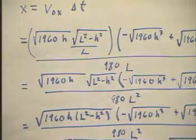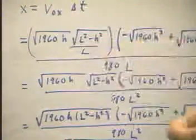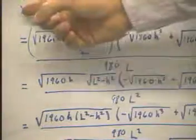Now that we have an expression for delta t, of course, we have an expression for v0x, we can get our x.